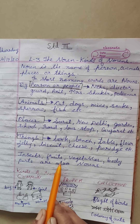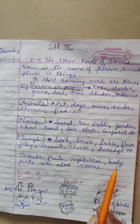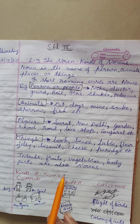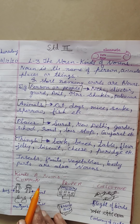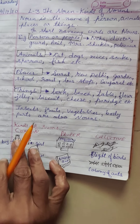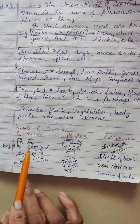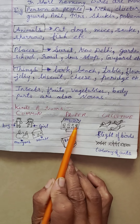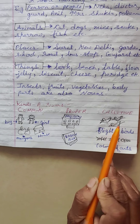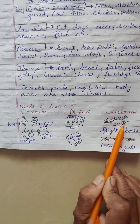Insects, fruits, vegetables, body parts are also nouns. Here, kinds of nouns are: common noun, proper noun, collective noun.